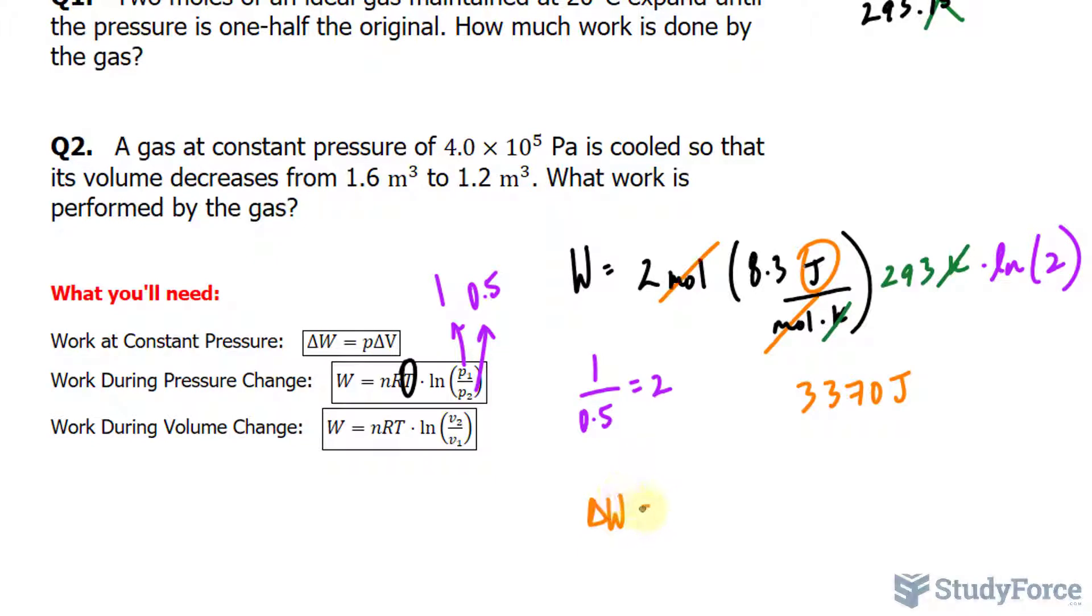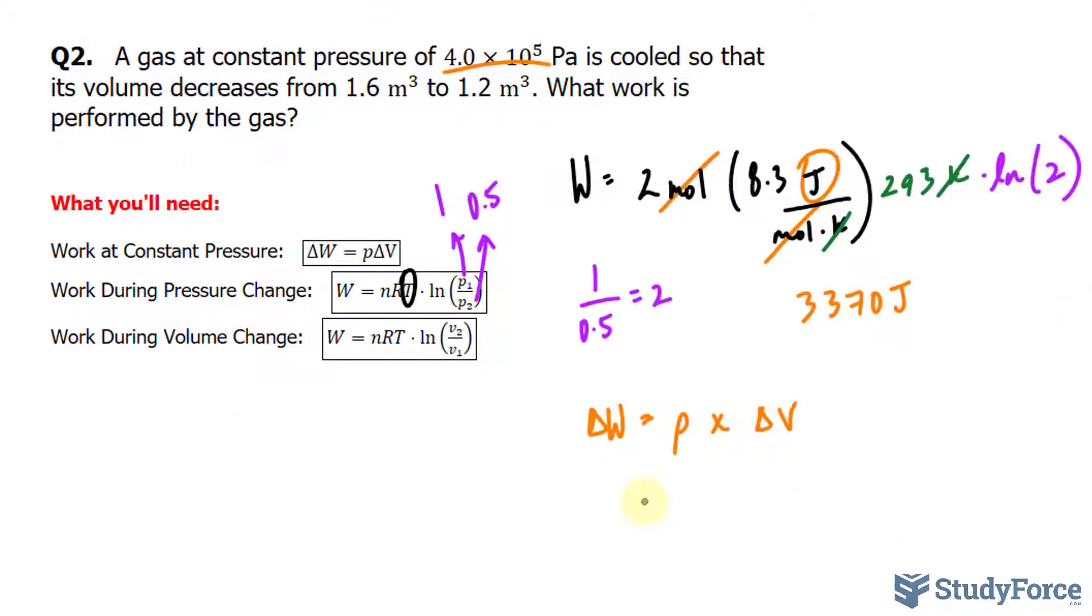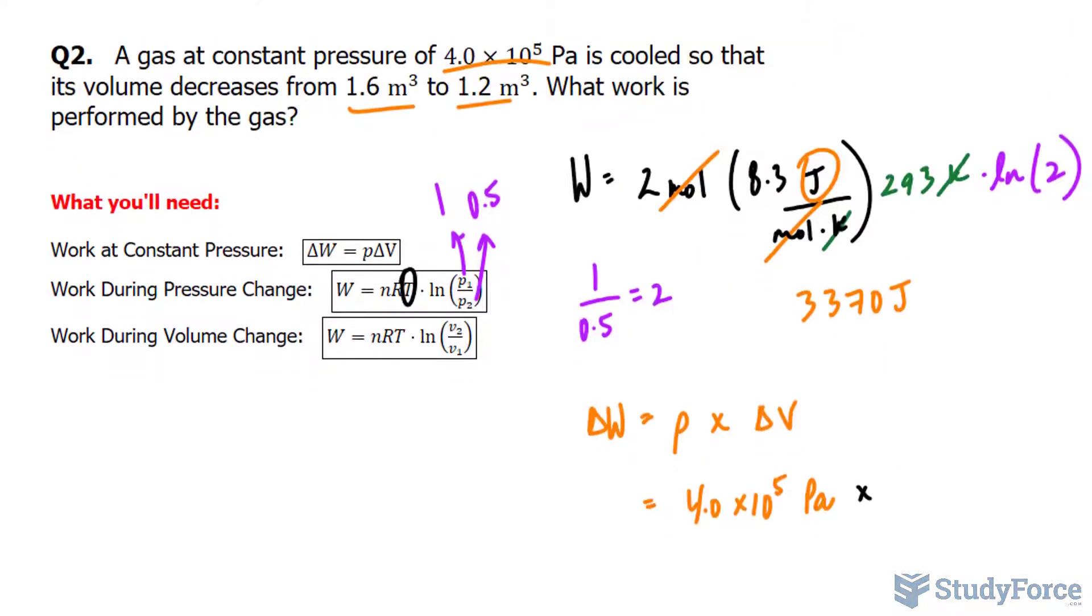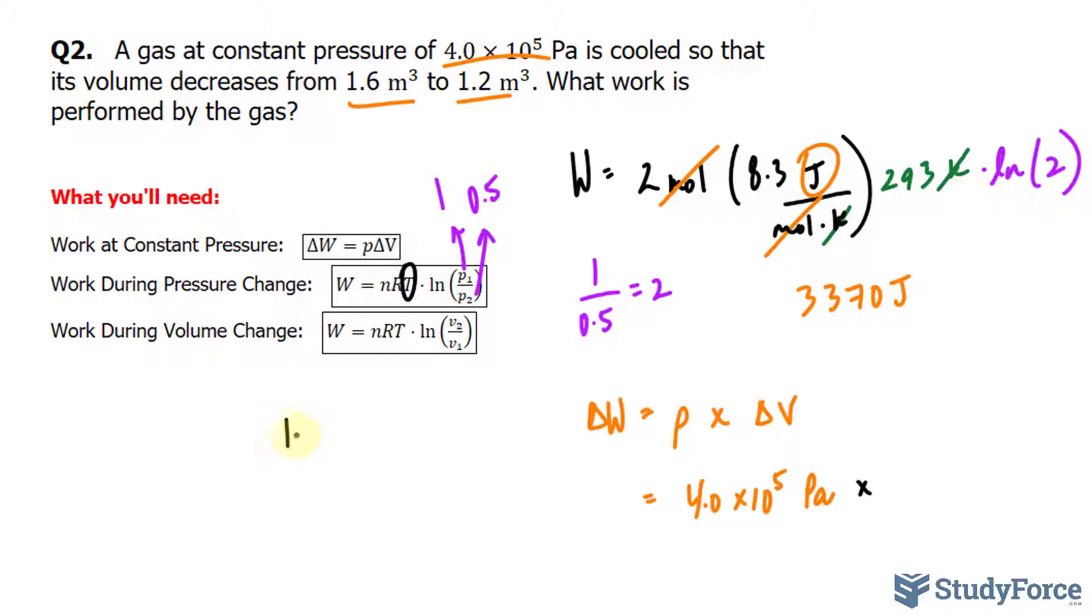Where the change in work is equal to the pressure, and that's constant at 4.0 times 10 to the power of 5, multiplied to the change in volume. So I'll take 4.0 times 10 to the power of 5 pascals, and that gets multiplied to the change in volume. It goes from 1.6 to 1.2. Final minus initial, negative 0.4 meters cubed.